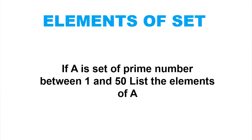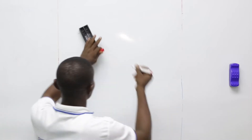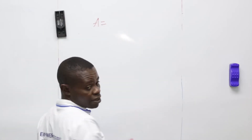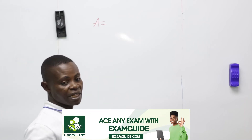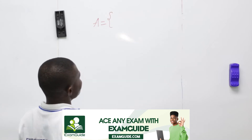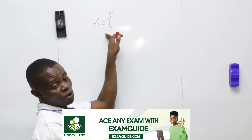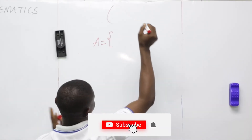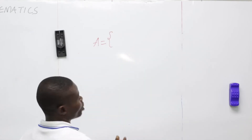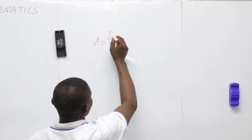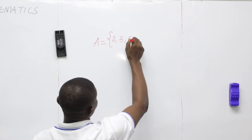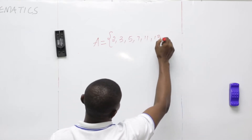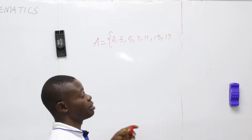Or maybe what are the multiples of a given number. Look at example one: if A is a set of prime numbers between 1 and 50, list the elements of A. The elements of A — this opening brace is used to enclose our sets, not brackets. Between 1 and 50, the prime numbers are: 2, 3, 5, 7, 11, 13, 17. Note: 15 is not a prime number because it can be divided by 3.